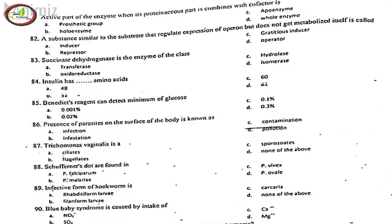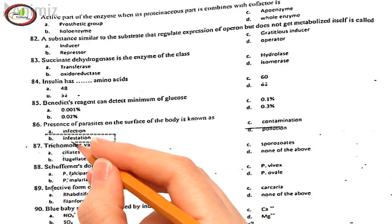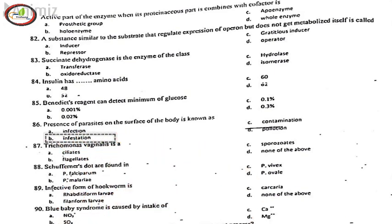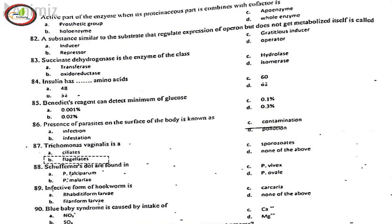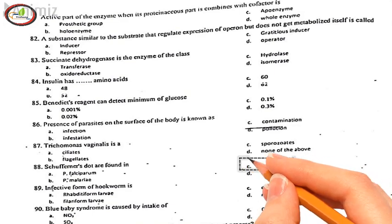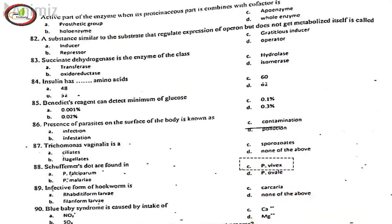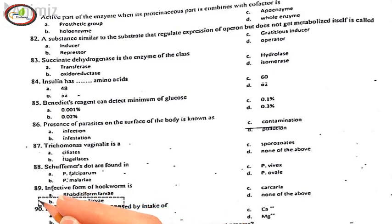86. Presence of parasites on the surface of the body is known as, B. infestation. 87. Trichomonas vaginalis is, B. flagellates. 88. Schüffner's dots are found in, C. P. Vivax. 89. Infective form of hookworm is, B. filariform larvae. 90. Blue baby syndrome is caused by intake of, A. NO3-.